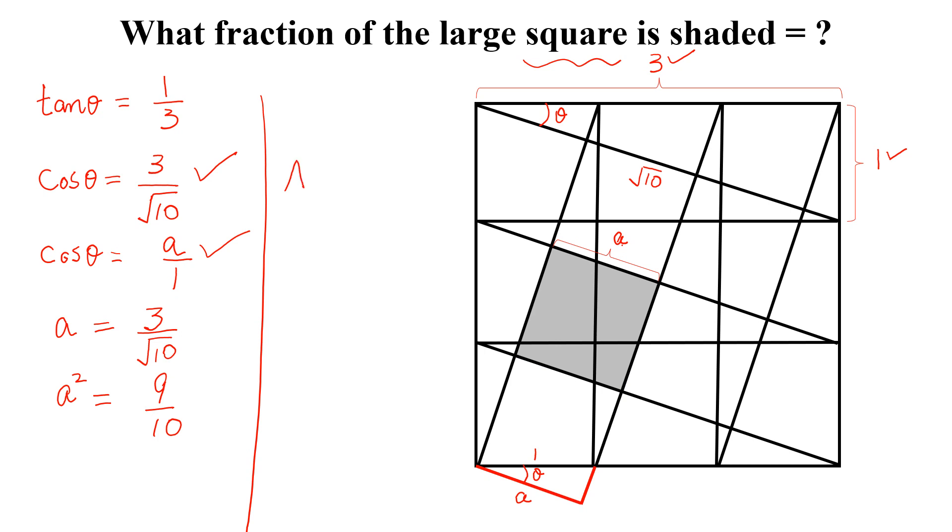Now area of the large square will be equal to 3 square. The side of the large square is 3, so 3 square and area of the large square is 9. And area of the shaded region is 9 divided by 10.